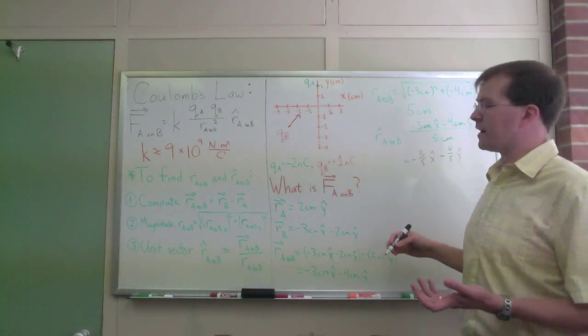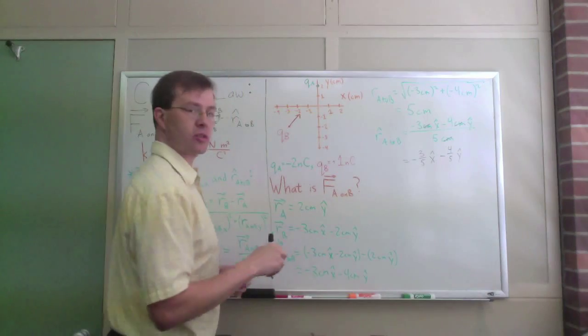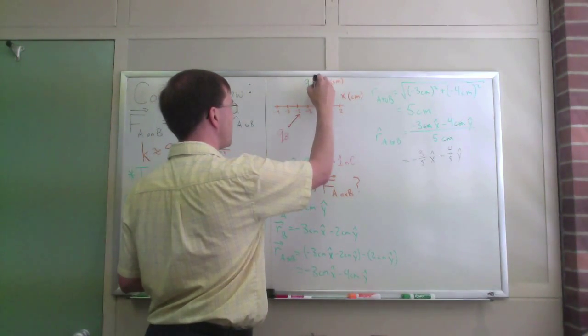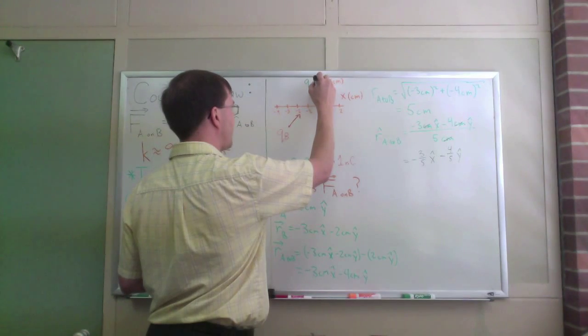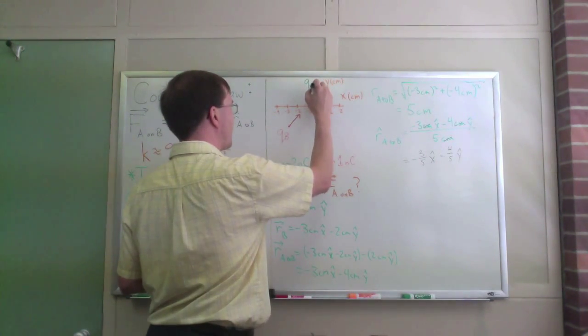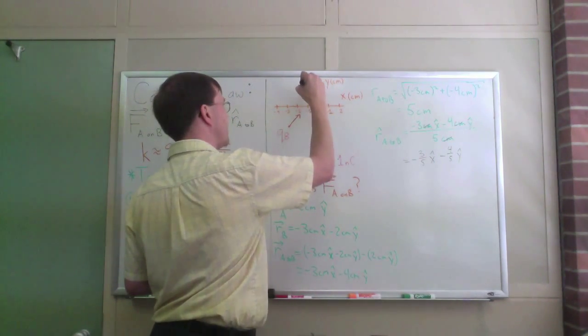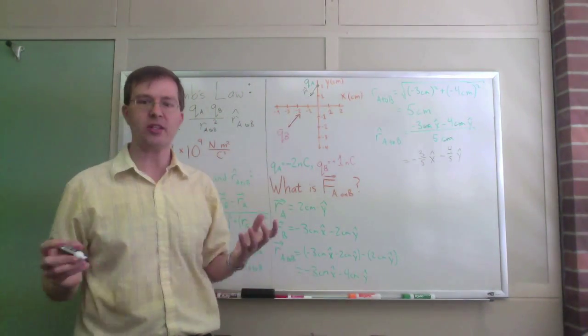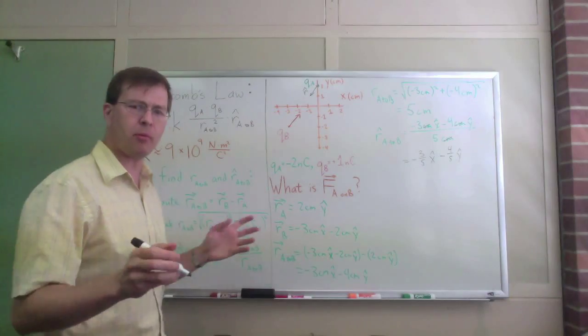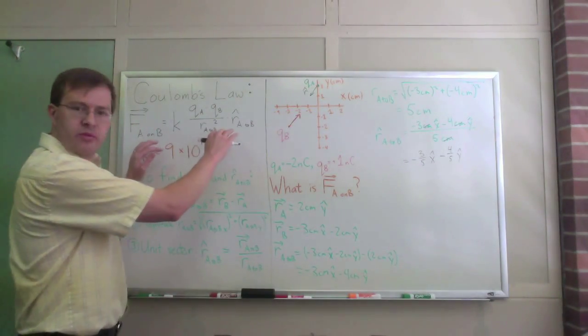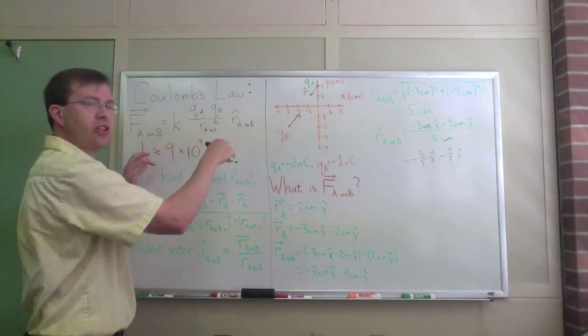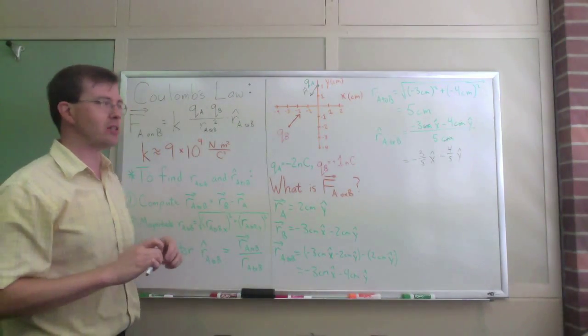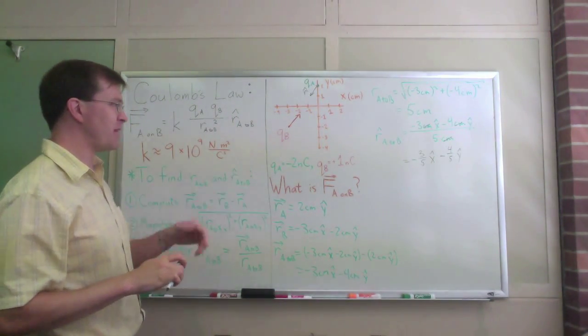That's my unit vector. And again, if I drew that up here, minus 3 fifths minus 4 fifths, I would be drawing something, minus 3, minus 4, something that looks kind of like that. There's my r-hat vector in my picture. It points straight from A toward B. That's what a unit vector is supposed to be. So remember what this does. In Coulomb's law, the r-hat is mostly the direction. The rest of it is mostly the magnitude. We'll have one little exception to that where the plus and minus signs come in, but that's basically the story.